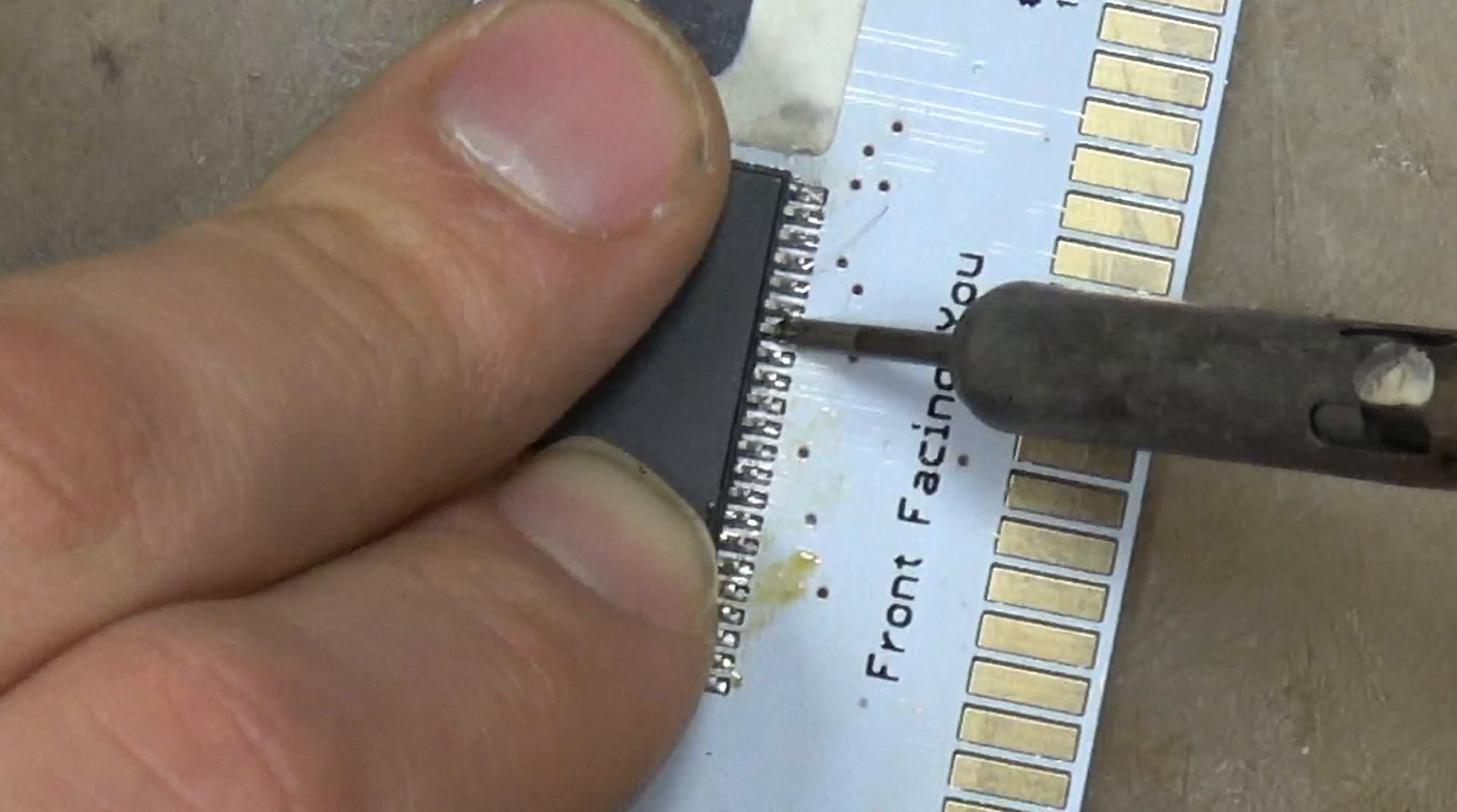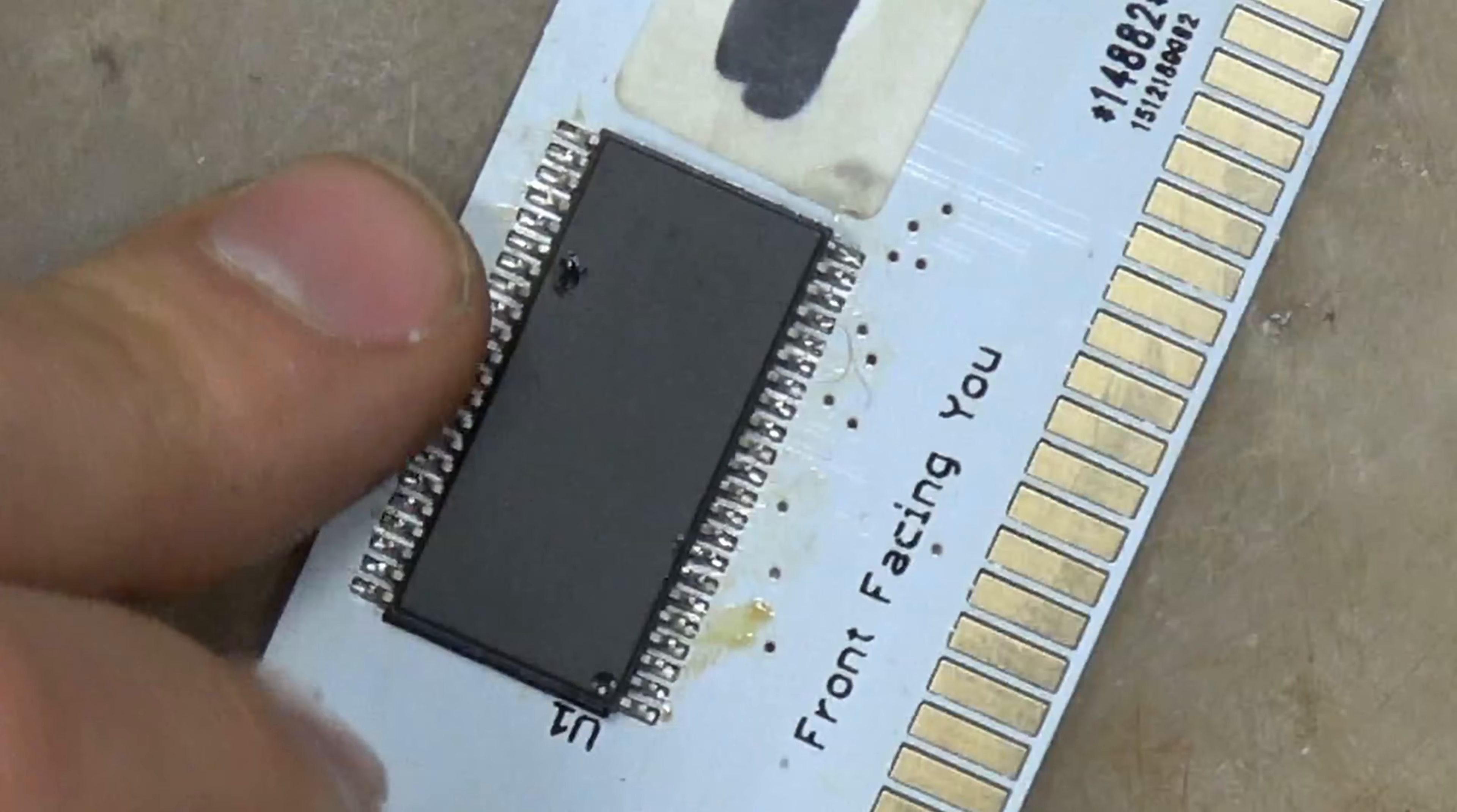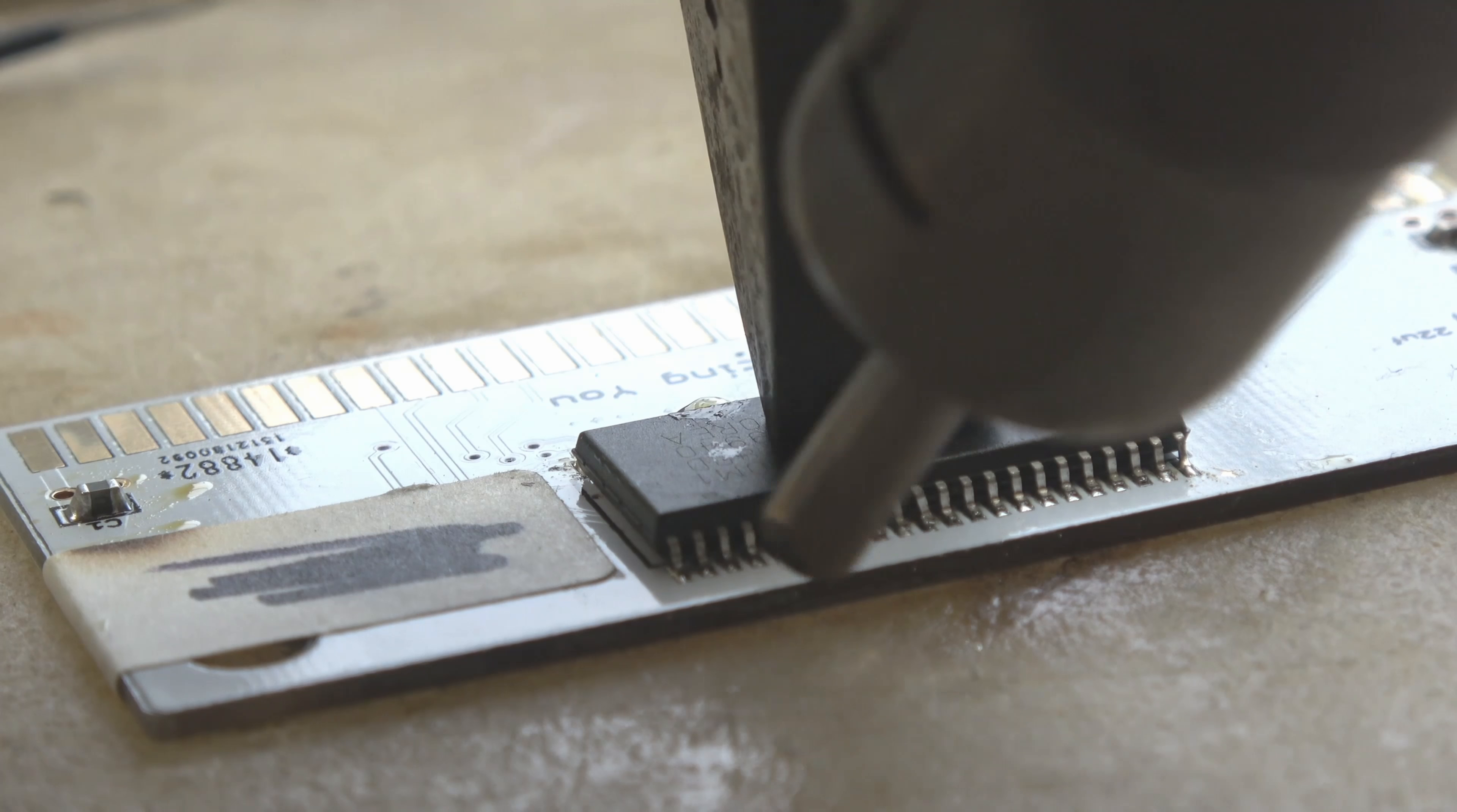Because the pads are tinned and the feet are tinned you're just melting the two solder together. You don't have to use the chisel tip, you could also hot air this, but for these specific chips I actually prefer to do each pin by hand with the iron. I feel it just gets a stronger connection.